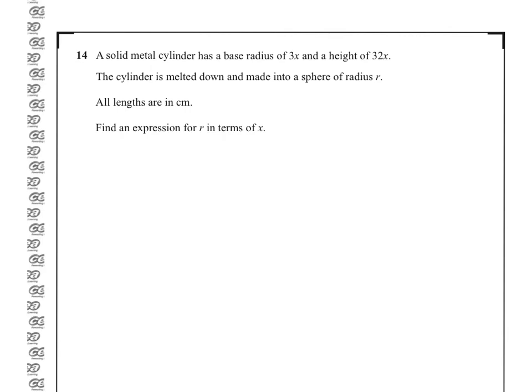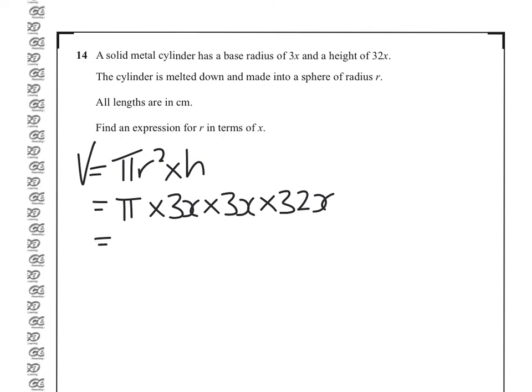A cylinder is a prism, and the volume of a cylinder is the cross-sectional area, so that is the area of a circle, times the height. So in this case, that will be pi times 3x times 3x times 32x. 32 times 9, 9 twos are 18, 9 threes are 27, so it's 28, so 288 pi, and x times x times x is x cubed.